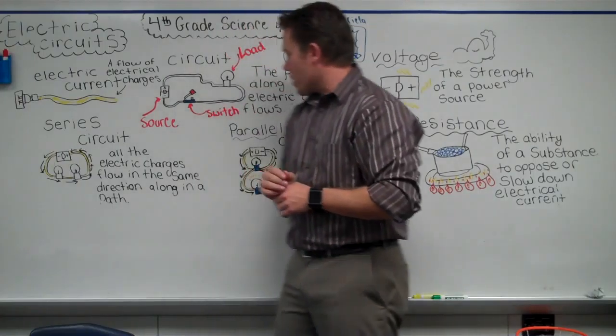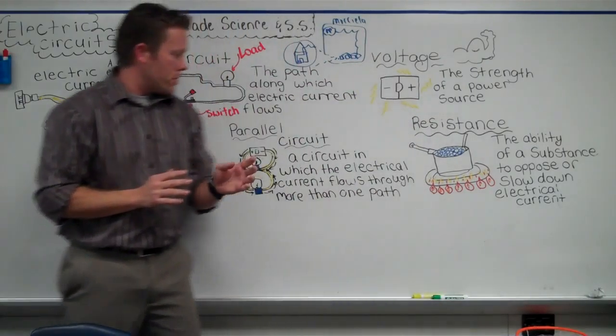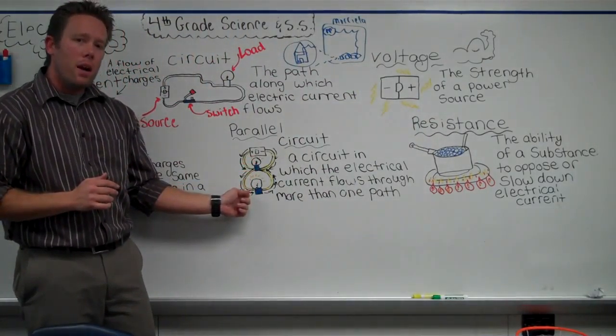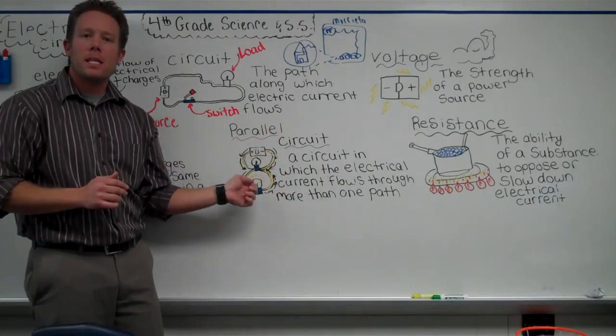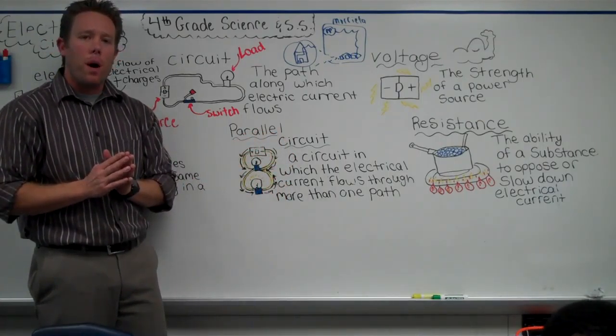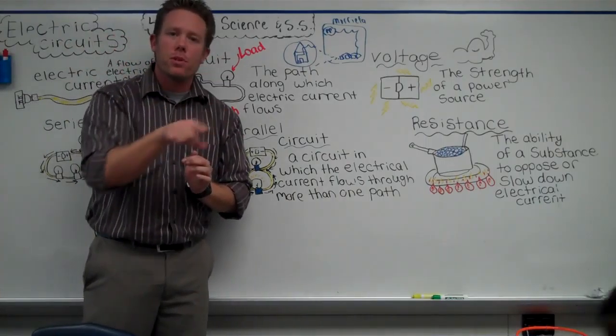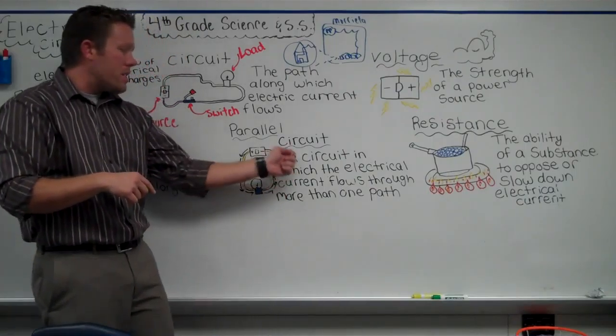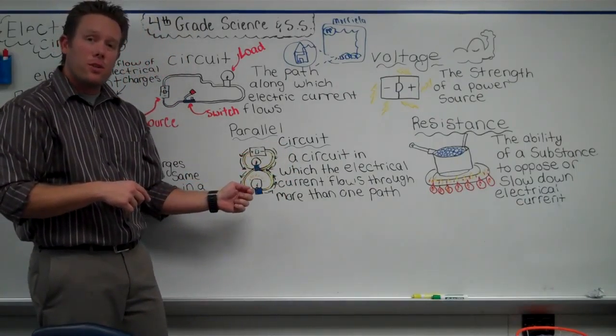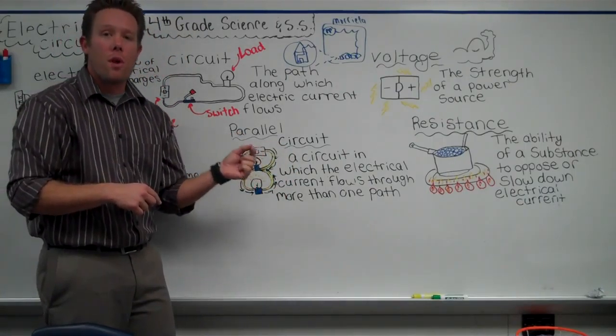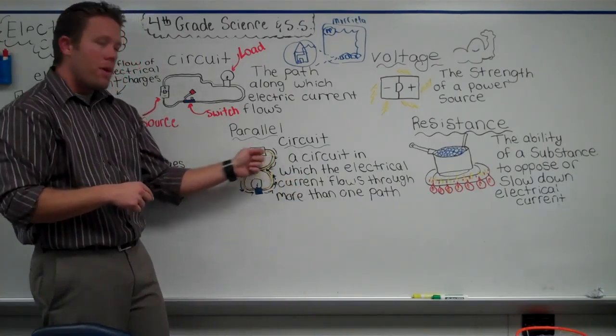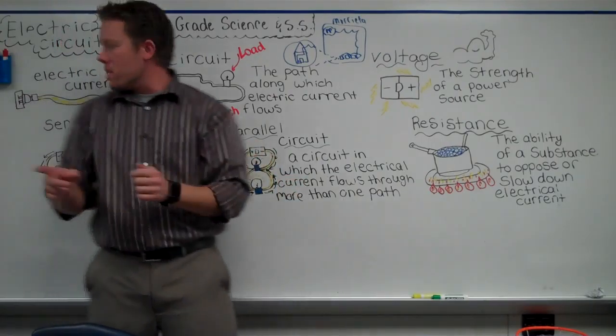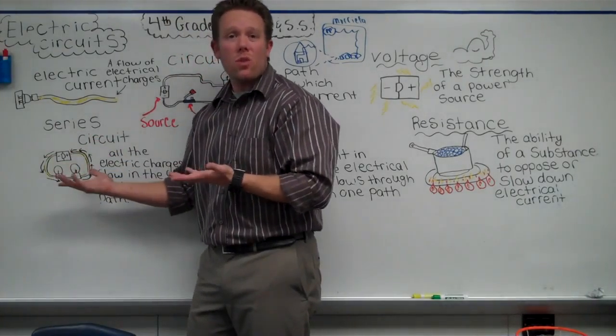The other kind of circuit is a parallel circuit. You can see here that there are different paths that the electricity can flow upon. It's not just a simple circuit or a simple circle, but there are different paths that the electricity can flow on. There's more than one path. There's just more than one path here, whereas over here, it's just one path.